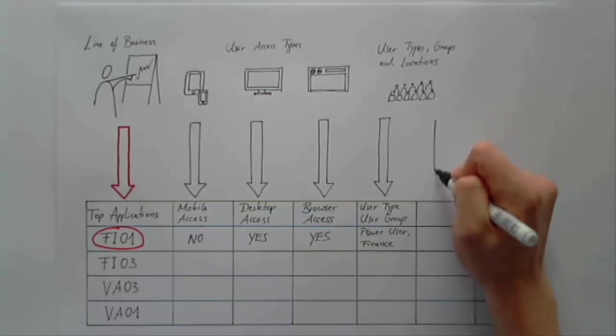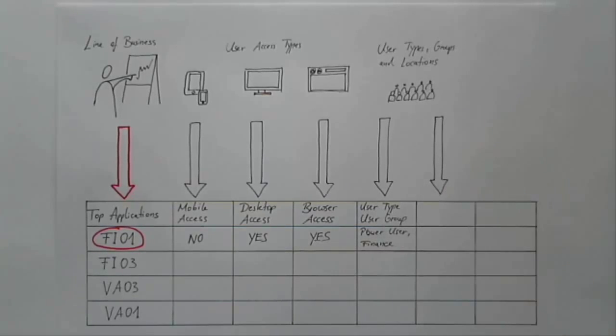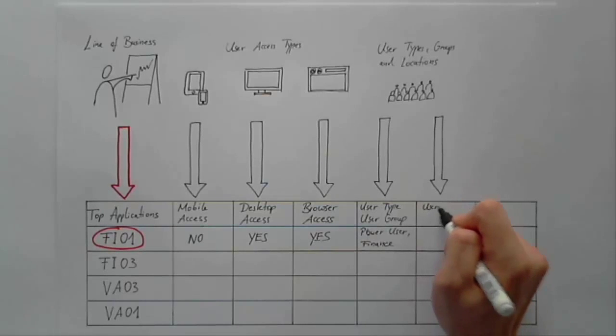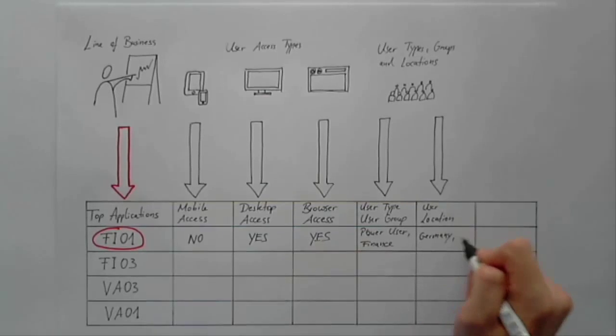It can also be helpful to understand whether you can assign your applications to a group of users or to a specific location. This is especially of interest when defining your roadmap later on.